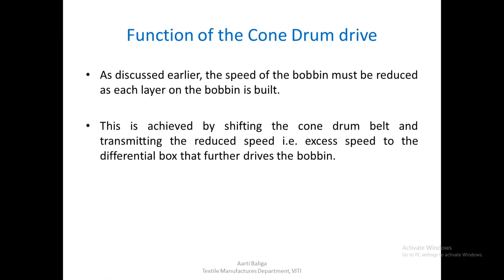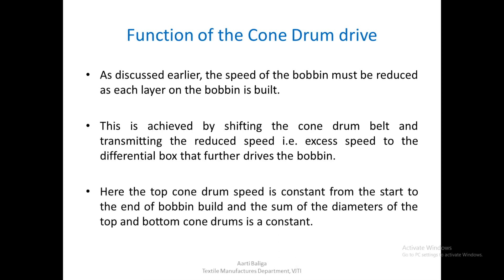This is achieved by shifting the chondrom belt and transmitting the reduced speed, that is the excess speed, to the differential box that further drives the bobbin. The chondrom speed is constant from start to end of the bobbin build, and the sum of the diameters of the top and bottom chondroms put together should be a constant.